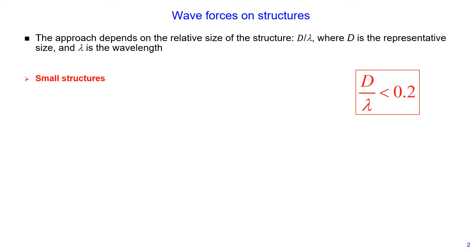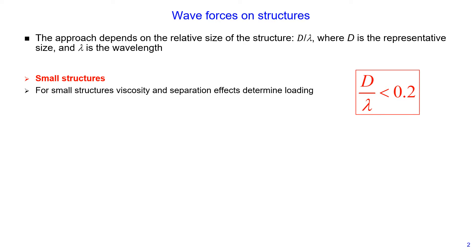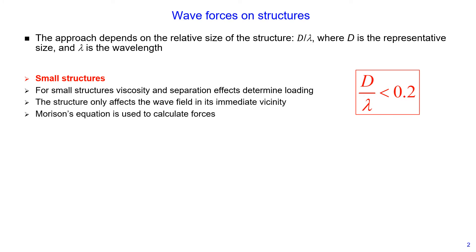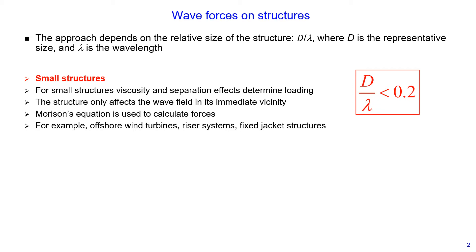Small structures are defined when this ratio is less than 0.2. For small structures, viscosity and separation effects determine loading on the structure. The structure only affects the wave field in its immediate vicinity. To calculate forces, we use Morrison's equation. Examples include offshore wind turbines, riser systems, or fixed jacket structures.